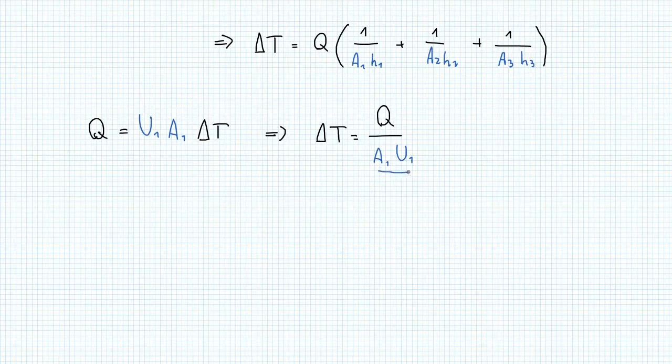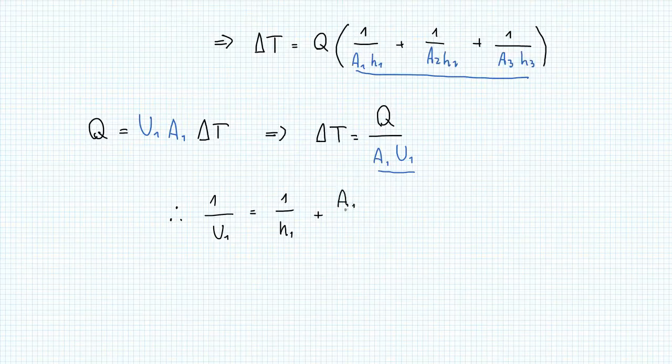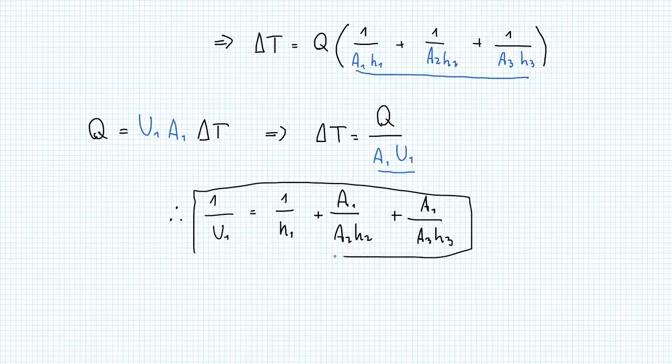So establishing the same analogy as we did before, and multiplying that area 1 for every term in the brackets, we'll find that 1 over U1 equals 1 over H1, because in this term the area is multiplied off, plus A1 over A2 times H2, plus A1 over A3 times H3. And this is how the overall heat transfer coefficient U is evaluated in radial flow.